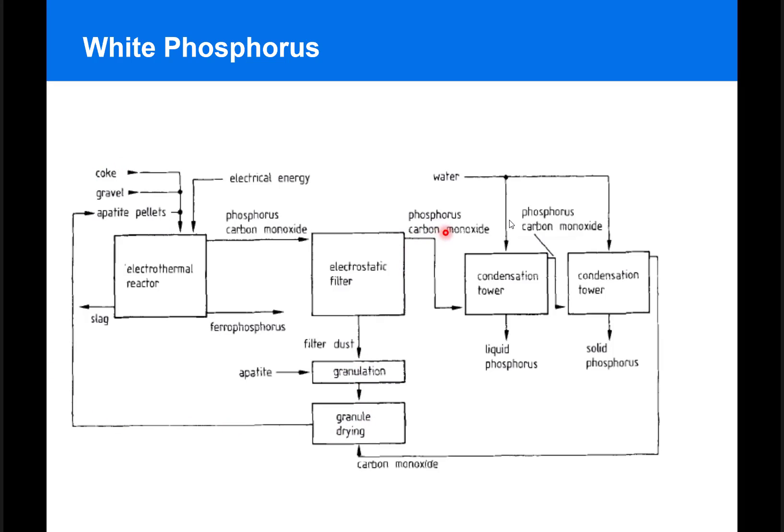Any remaining dust of apatite is granulated and recycled into the production step, while the product phosphorus and carbon monoxide is moved to a condensation tower, in which white phosphorus is condensed into liquid phosphorus.